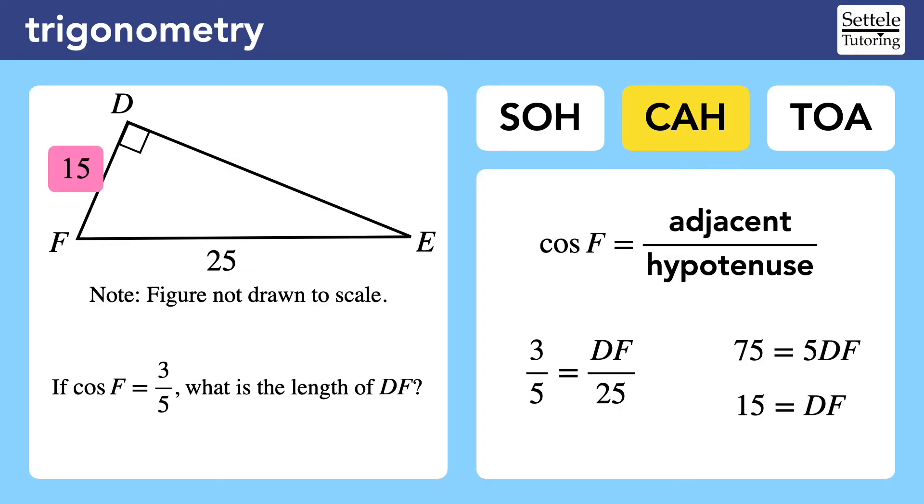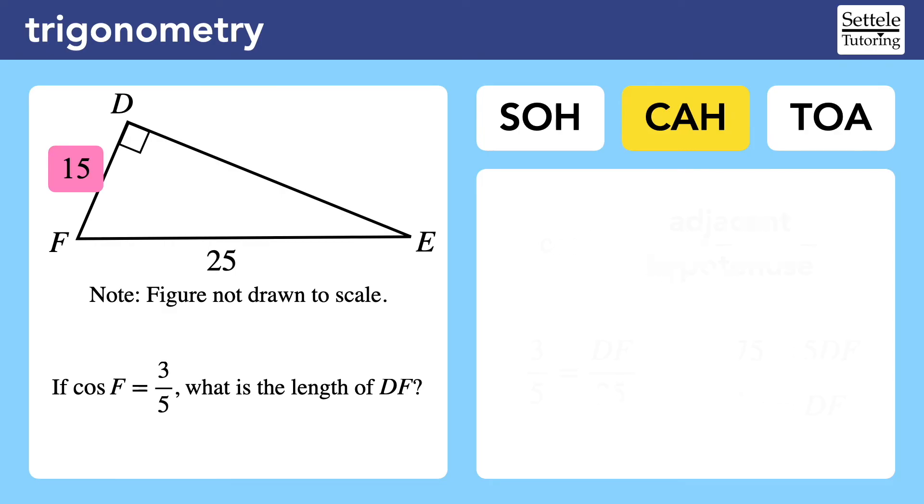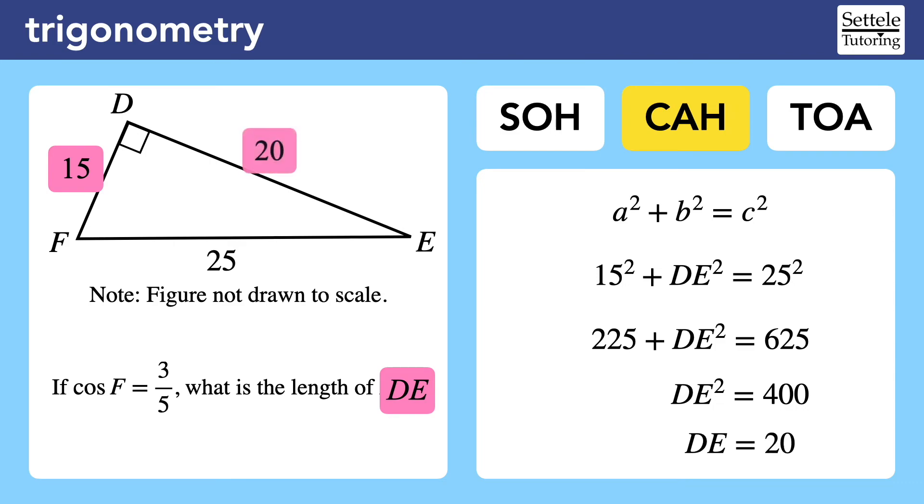The SAT can make this question slightly harder by asking for the other missing side. If they had instead asked for the length of DE, we would still use the cosine formula to find DF. Then we can use Pythagorean theorem to solve for the missing side. Remember that we can use Pythagorean theorem whenever we have two sides of a right triangle.